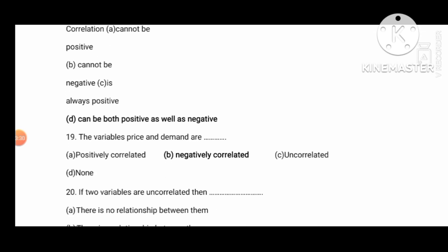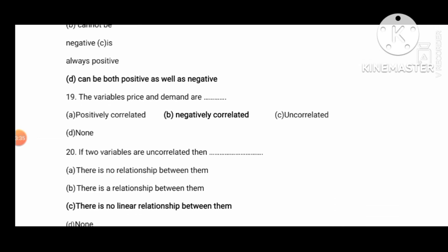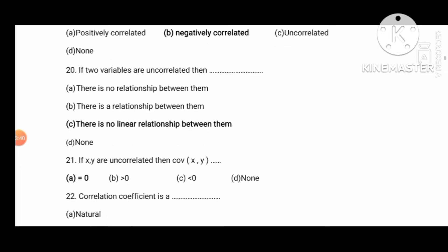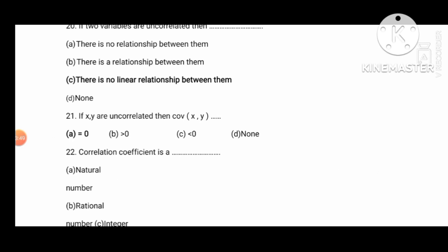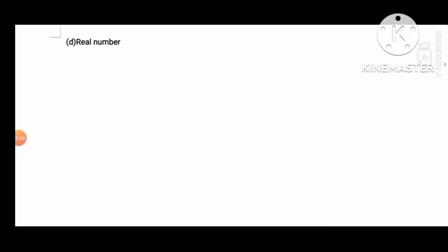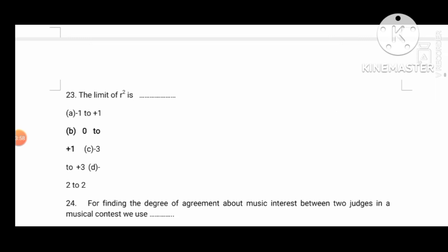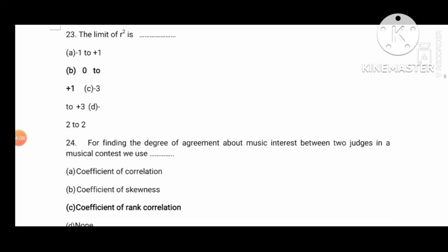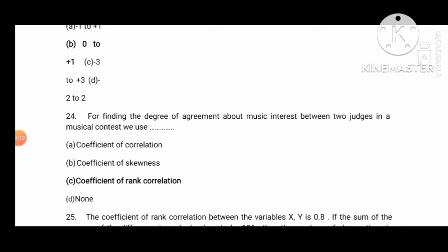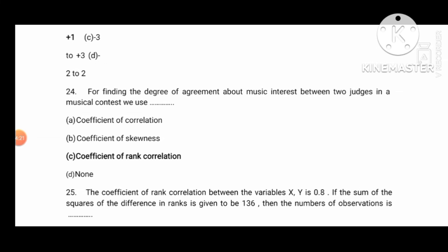The variables price and demand are negatively correlated. If two variables are uncorrelated, there is no linear relation between them. If X and Y are uncorrelated, then the covariance of X, Y equals 0. The correlation coefficient is a real number. The limit of R squared is 0 to plus 1. To find the degree of agreement about music interest between two judges, we can use the coefficient of correlation — specifically the rank correlation.